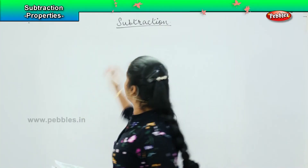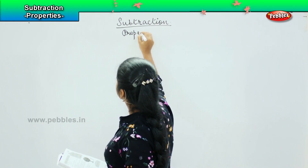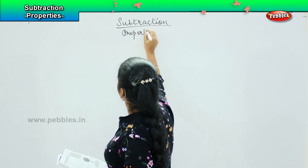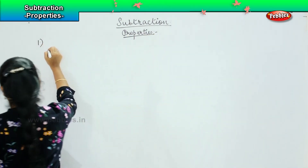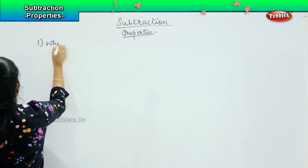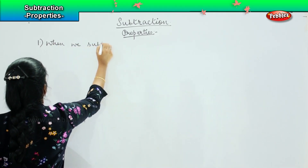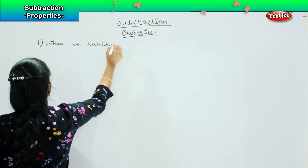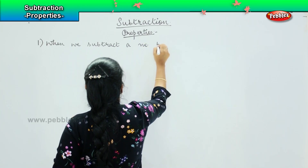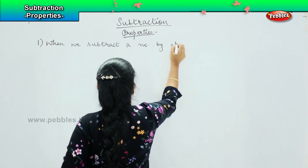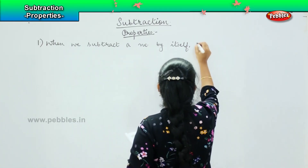Talking about the properties of subtraction, we have three basic properties. The very first property says that when we subtract a number by itself, the answer is zero.